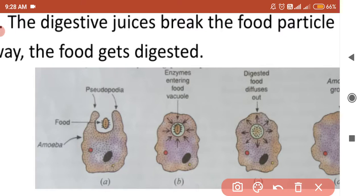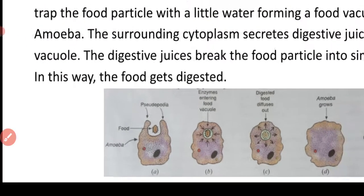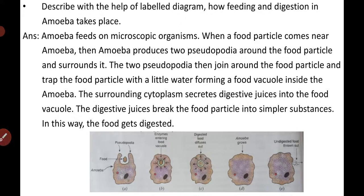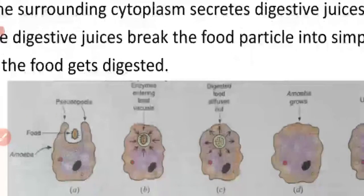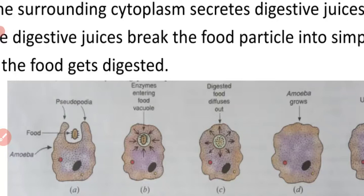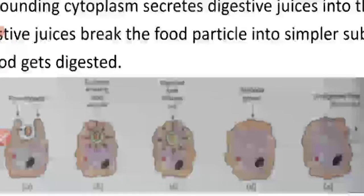The digestive juices will act on the food particle inside the food vacuole. These digestive juices help to break down the food particle into simpler substances, and that is how the food gets digested. In Figure C, the digested food then diffuses out and is absorbed by amoeba. The absorbed food is used for the production of energy, growth, and maintenance of amoeba. In Figure D, amoeba grows after absorbing the digested food.